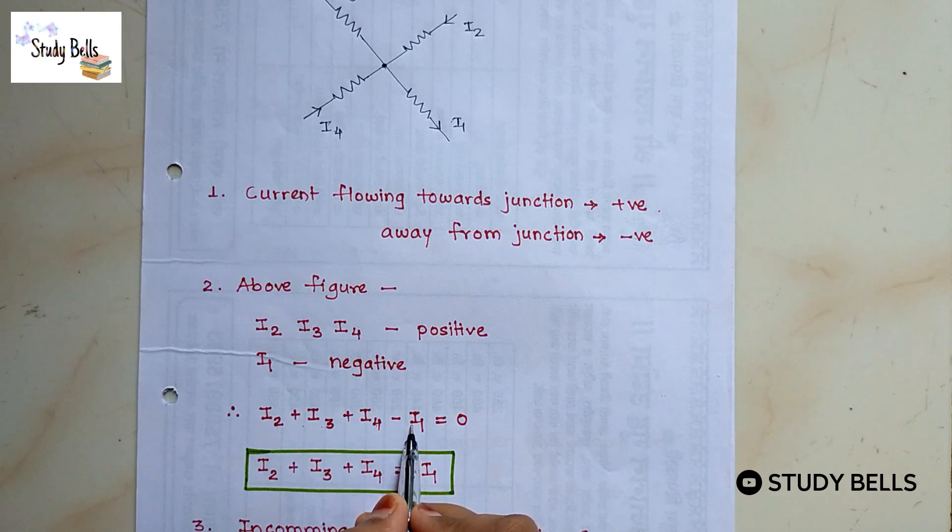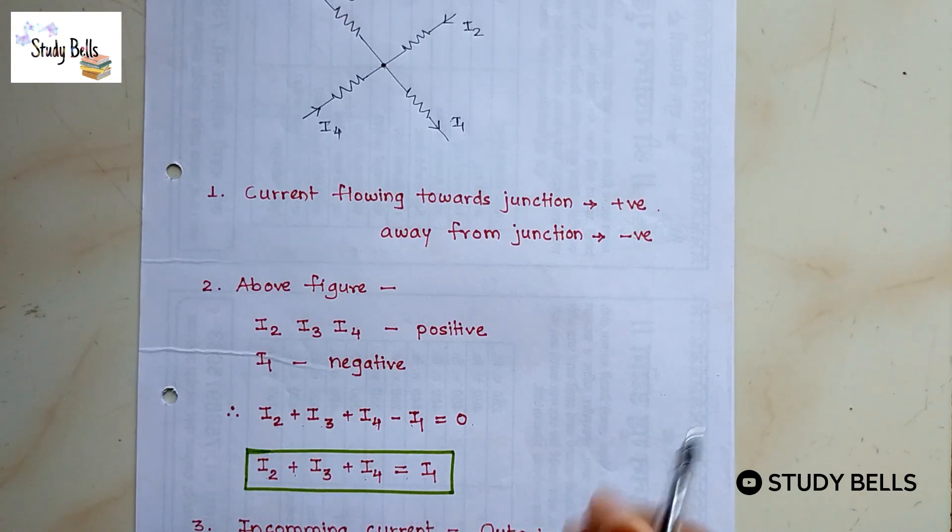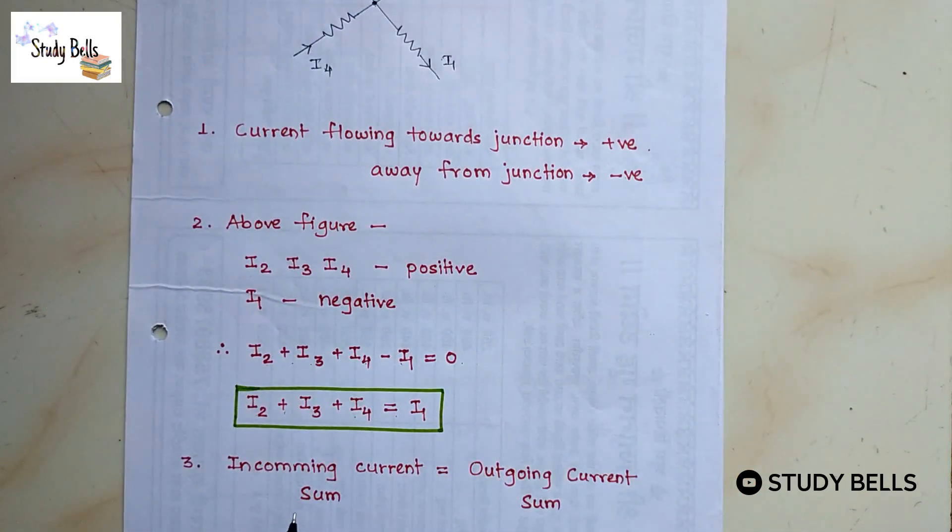So when we take I1 to another side we will get I2 plus I3 plus I4 equals I1. So we can conclude that sum of incoming current is equal to sum of outgoing current.